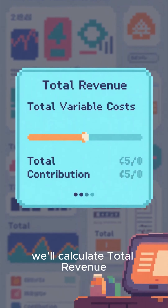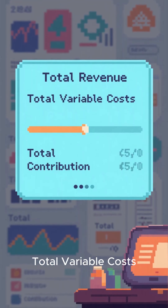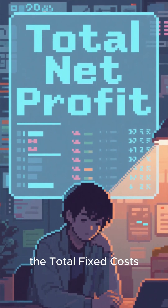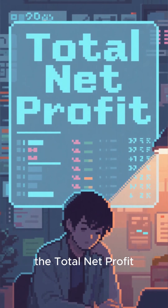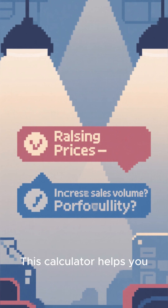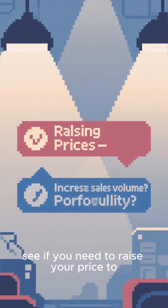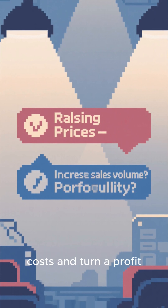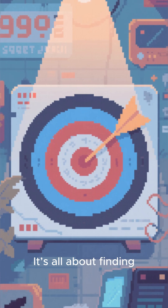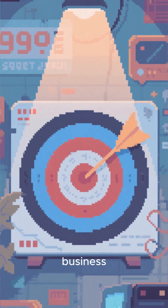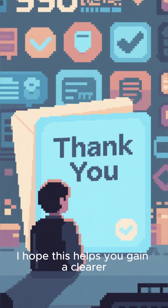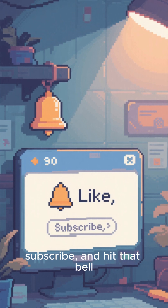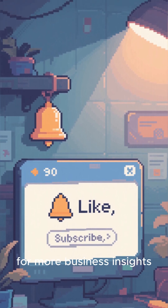In the macro view, we'll calculate total revenue, total variable costs, and total contribution. Then we subtract the total fixed costs to find our big number: the total net profit. This calculator helps you see if you need to raise your price to improve your contribution margin, or if you just need to sell more to cover your fixed costs and turn a profit. It's all about finding that sweet spot for your business.